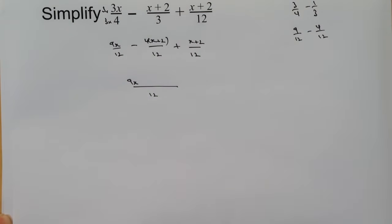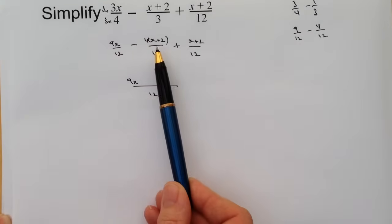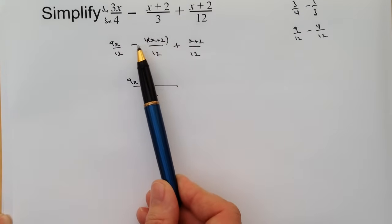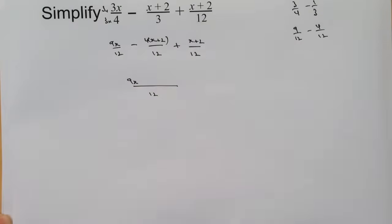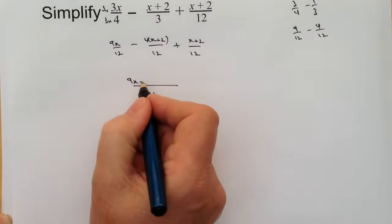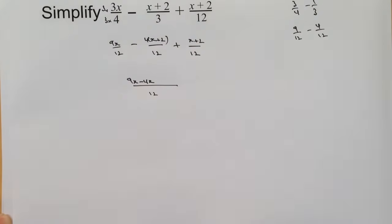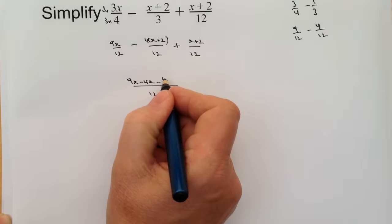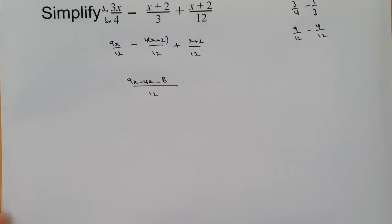Now we're going to be a little bit careful because everything inside this bracket we're multiplying by minus 4. We need to look at multiplying out the bracket, so we get minus 4x, and then we've got minus 4 times positive 2, which is going to be minus 8. Just be really careful about the way that you do these.